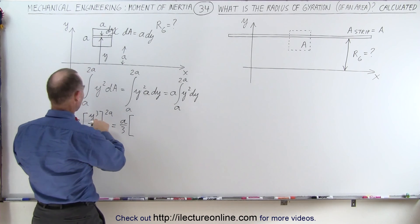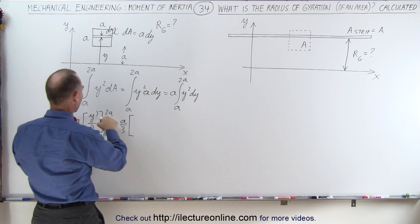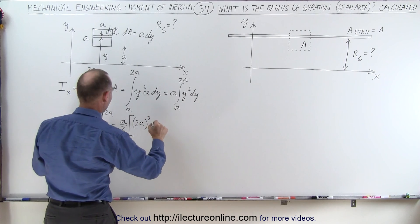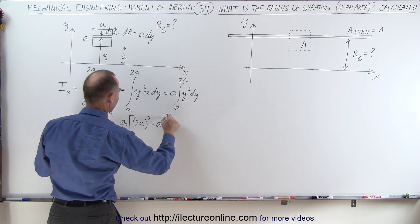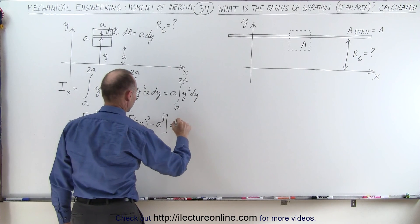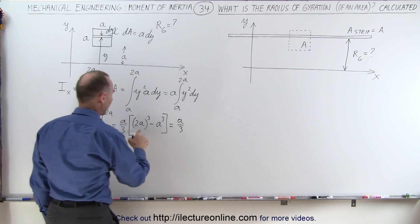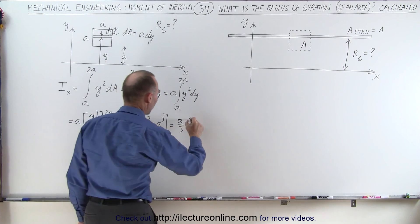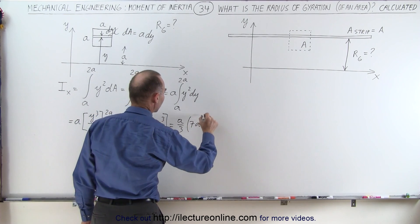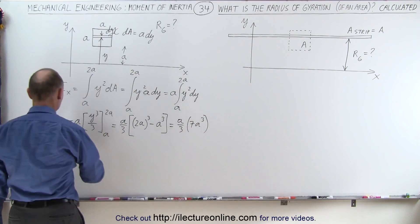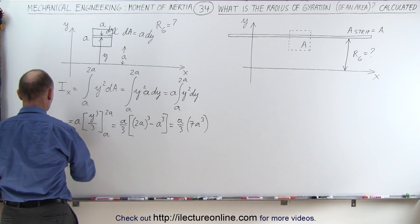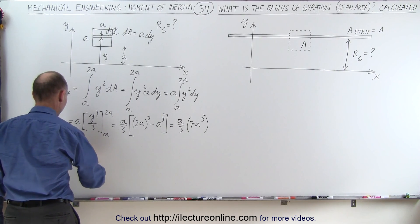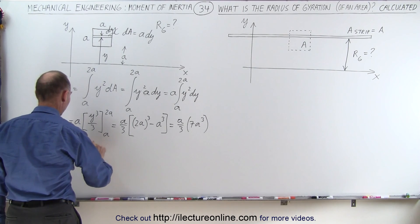Replacing y with the bounds: 2A cubed minus A cubed gives us 8A³ minus A³, which is 7A³. So this becomes A/3 times 7A³, and finally the moment of inertia I_x equals 7/3 · A⁴.